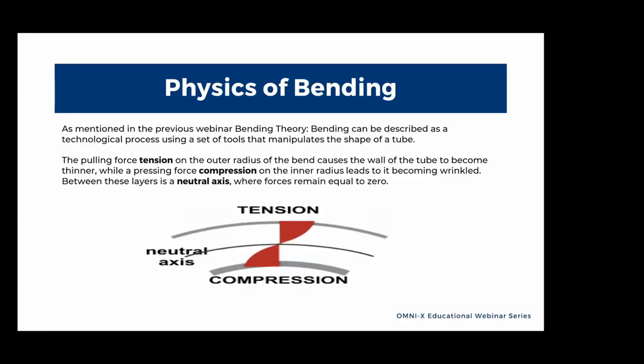As mentioned in the previous webinar, Bending Theory, bending can be described as a technological process using a set of tools that manipulates the shape of the tube. The pulling force or tension on the outer radius of the bend causes the wall of the tube to become thinner, while the pressing force or compression on the inner radius leads to becoming wrinkled. Between these layers is a neutral axis where forces remain equal to zero.